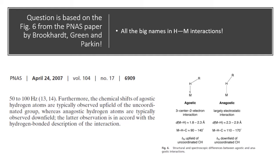One criterion is the distance. The other is the angle at which the hydrogen is approaching the metal atom. The third point is about the chemical shift of the C–H proton which is interacting with the metal, compared to the C–H proton present on the same carbon but not interacting with the metal — the uncoordinated C–H proton. Agostic interactions are supposed to have an upfield shift with respect to the uncoordinated C–H. When you say upfield, that means the proton is more shielded and so you have to apply a greater magnetic field.